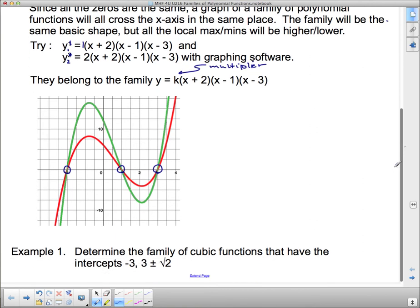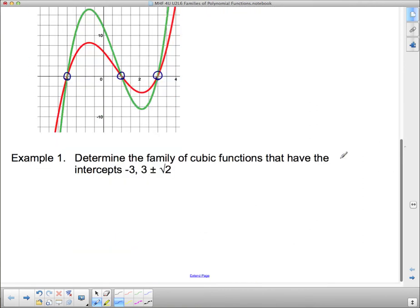So now I'm going to go through two examples of how to find polynomial functions. It says determine the family of cubic functions that have these intercepts. Now obviously this is not a nice value. They're not whole number intercepts, so they must have not factored nicely. But we did something like this in the last lesson when we were talking about finding things that had certain zeros. Now we're talking about functions rather than equations.